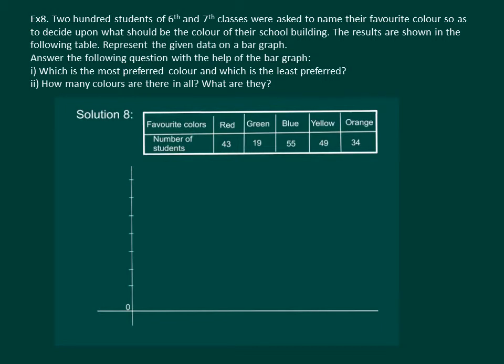Let us make equal divisions on our vertical axis and start with an increment of 10. Hence we have chosen the scale 1 unit is equal to 10 students, and we have mentioned that we are depicting number of students on the vertical axis.